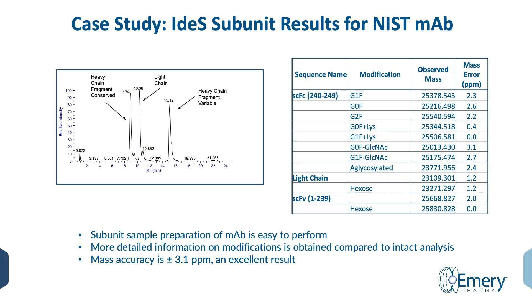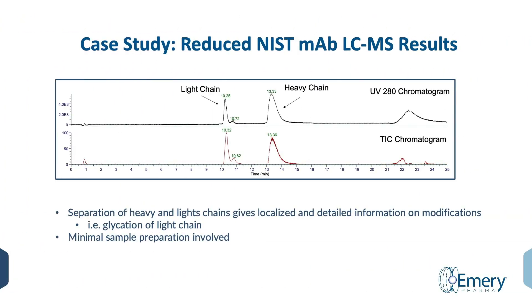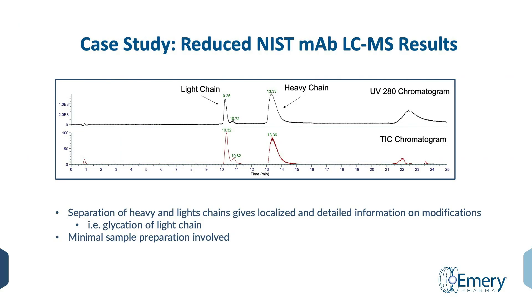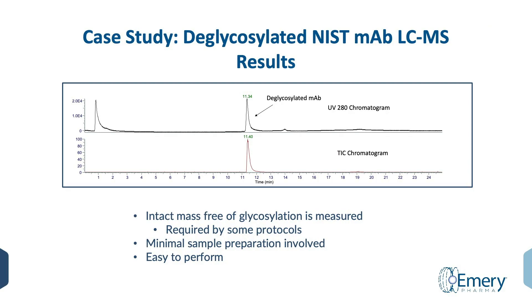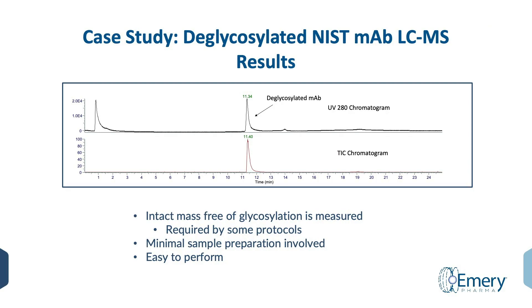As can be seen, the study demonstrated that hexose modification is located on the light chain. The reduction of inter-chain disulfide bonds separates the heavy and light chains chemically. The resulting chromatogram is presented here. Localized and detailed information on a modification such as glycation of the light chain is obtained. The deglycosylated MAB was obtained after treatment with the enzyme PNGase F at 37 degrees Celsius. Some protocols call for this information because this answers the question: what is the mass of the protein without any glycosylation?